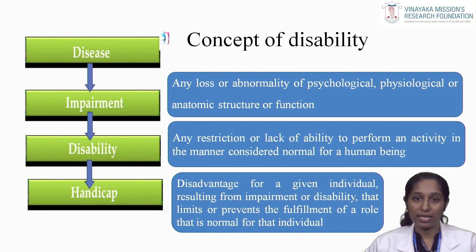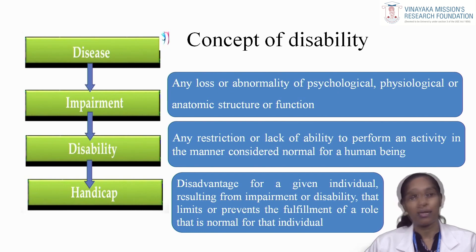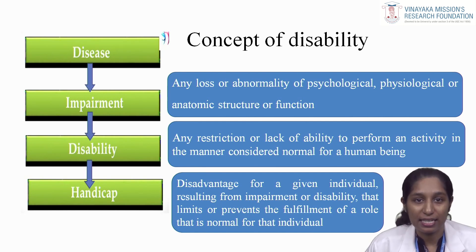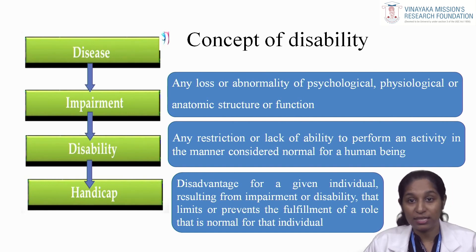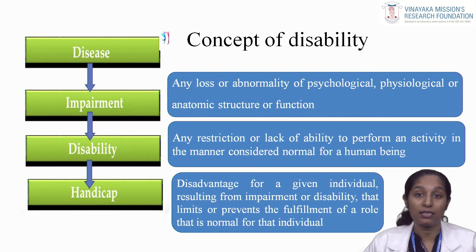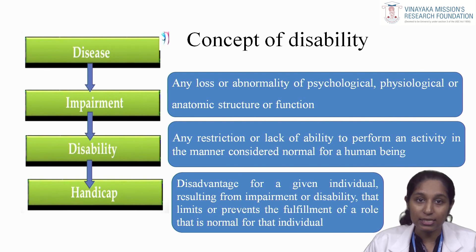The sequence of events leading to disability and handicap is as follows: disease may cause an impairment, impairment can lead to disability, and disability can lead to a handicap. An impairment is defined as any loss or abnormality of psychological, physiological or anatomic structure or function. An impairment may be visible or invisible, temporary or permanent, progressive or regressive. A disability is any restriction or lack of ability to perform an activity in the manner or within the range considered normal for a human being. Because of an impairment, the affected person may be unable to carry out certain activities considered normal for his age, sex, etc. — this inability is termed as disability. And as a result of disability, the person experiences certain disadvantages in life and is not able to discharge the obligations required of him or play the role expected of him in society. This condition is termed as handicap.